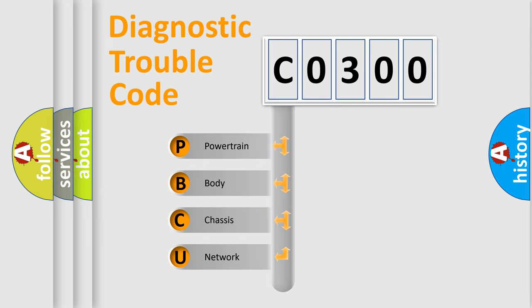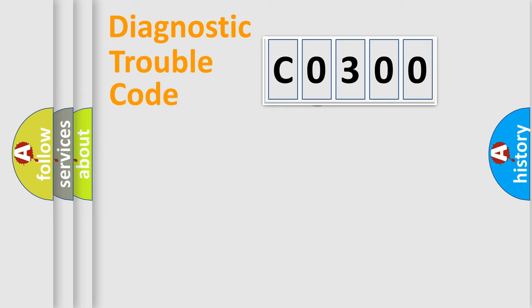We divide the electric system of automobile into four basic units: Powertrain, Body, Chassis, Network. This distribution is defined in the first character code.